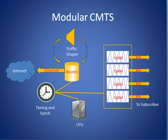DOCSIS 3.0 also supports a modular CMTS architecture. For much more detailed information on this architecture, we recommend you view our tutorial on modular CMTS. In a traditional CMTS architecture, the RF components, the routing, traffic shaping, and all other functionalities are fixed in one single shelf. In comparison, in a modular CMTS, each of these functionalities are typically provided in a separate shelf, thereby allowing separate amounts of them to be mixed and matched as needed.